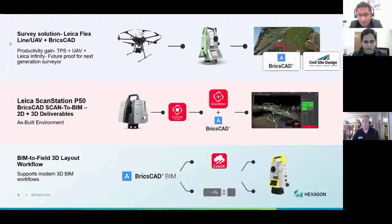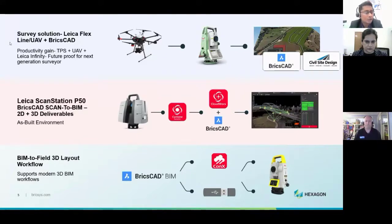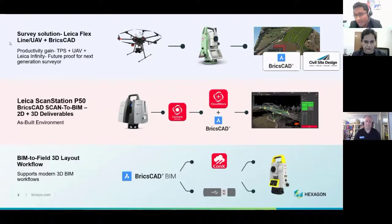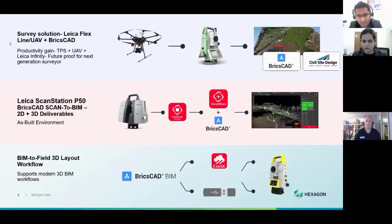Looking at the Hexagon family of solutions, BricsCAD and Civil Site Design are applicable in the first workflow involving traditional TPS survey and UAV data capture of as-built conditions. This data can be taken into BricsCAD and Civil Site Design for design purposes. Leica scan stations such as the P50 can capture long-range scans as point cloud or LiDAR data, brought into BricsCAD through Cyclone. The third workflow is BIM2Field 3D layout using Connex for managing road infrastructure projects more efficiently.